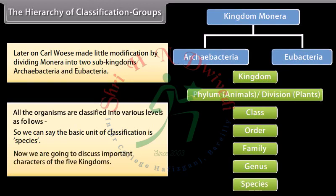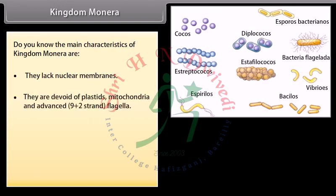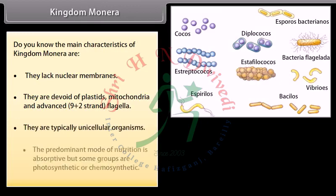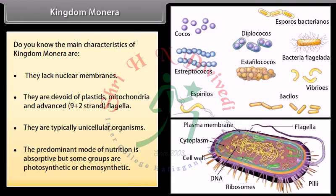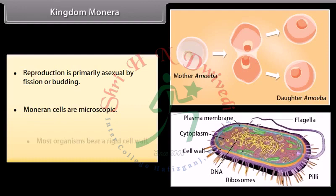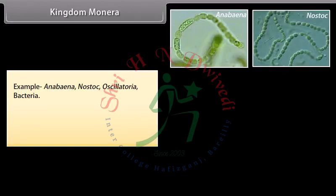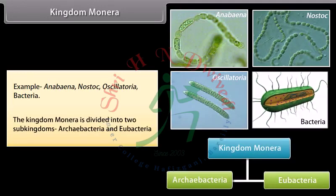The main characteristics of Kingdom Monera are that they lack nuclear membranes, are devoid of plastids, mitochondria, and advanced 9+2 strand flagella. They are typically unicellular organisms. The predominant mode of nutrition is absorptive, but some groups are photosynthetic or chemosynthetic. Reproduction is primarily asexual by fission or budding. Moneran cells are microscopic and most organisms bear a rigid cell wall. Examples include Anabaena, Nostoc, Oscillatoria, and Bacteria. Kingdom Monera is divided into two sub-kingdoms: Archaebacteria and Eubacteria.